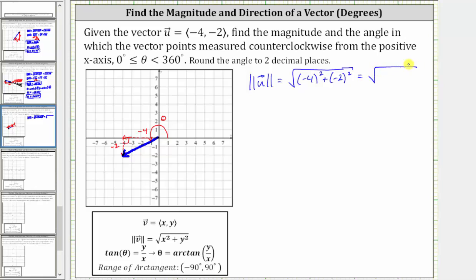which gives us the square root of 16 plus four, and therefore the magnitude of vector u equals the square root of 20.